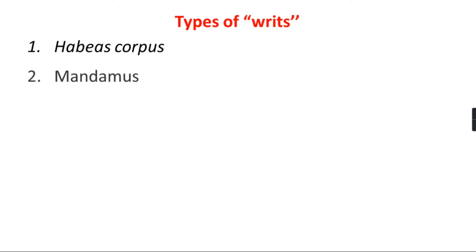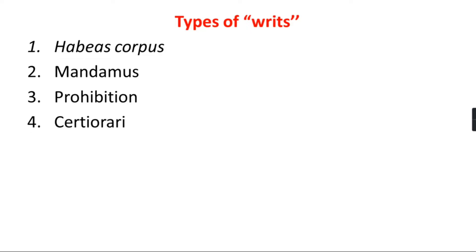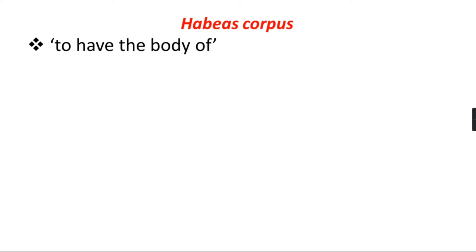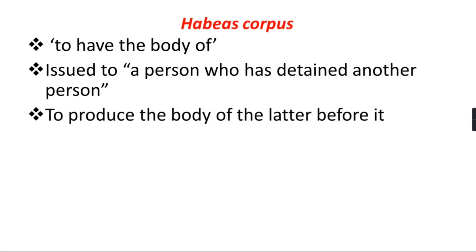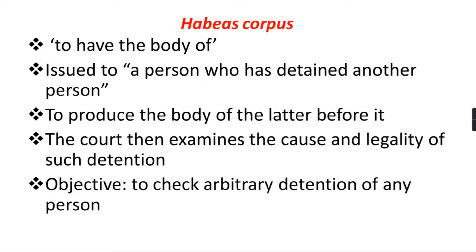There are five types of writs: (1) Habeas Corpus, (2) Mandamus, (3) Prohibition, (4) Certiorari, and (5) Quo Warranto. The literal meaning of Habeas Corpus is 'to have the body of.' This writ is issued when a person is detained by another person. It is issued to the person who has detained another, and the court examines the cause and legality of such detention. The objective of Habeas Corpus is to check arbitrary detention of any person.